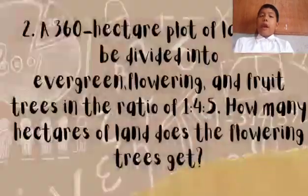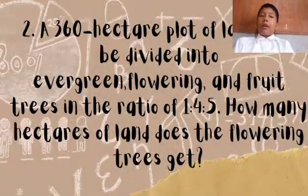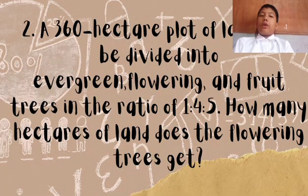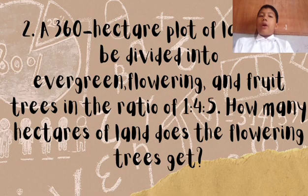Number 2, a 360-hectare plot of land is to be divided into evergreen, flowering, and fruit trees in the ratio of 1 is to 4 is to 5. How many hectares of land do the flowering trees get?